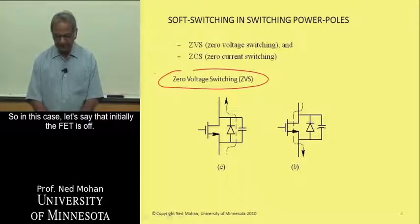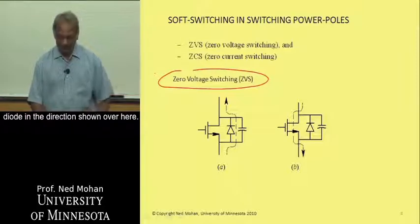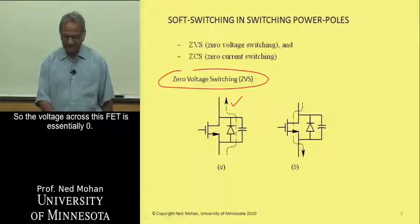So in this case, let's say that initially the FET is off, and the current is flowing through this anti-parallel diode in the direction shown over here. So the voltage across this FET is essentially zero, so if you turn this FET on here,